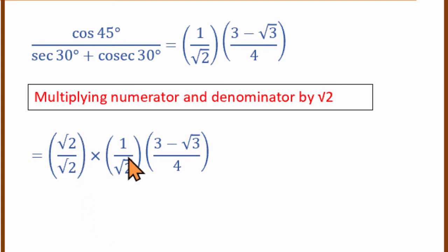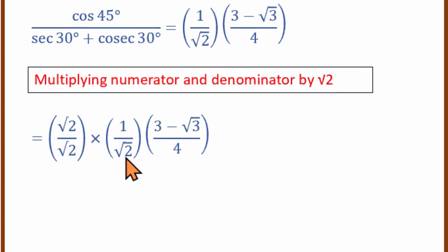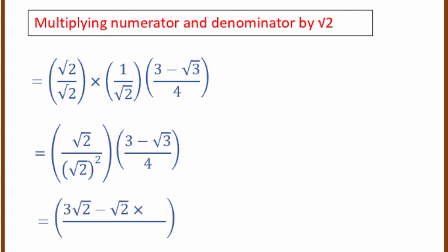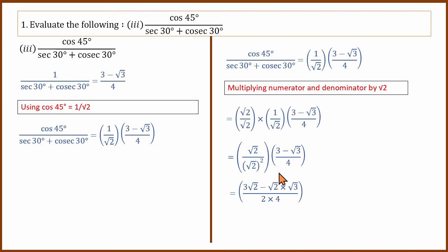We multiply by root 2 over root 2 to rationalize. In the denominator: root 2 times root 2 equals 2, and 2 multiplied by 4 gives 8. In the numerator, we multiply through by root 2. This completes the third sub-question.